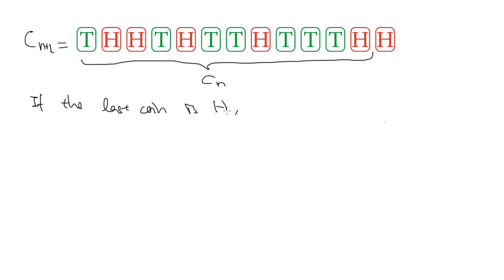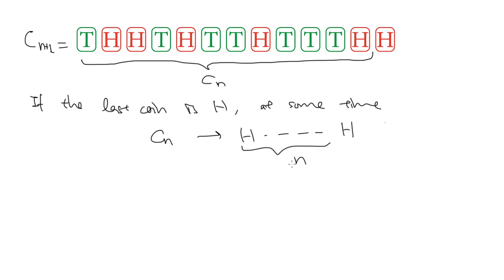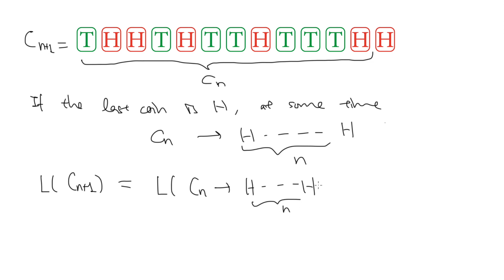If the last coin is a head, we cannot directly remove it, because at some point we need to turn it over. So the key observation is that when this happens, the first n coins must be all heads. And then we turn the last coin over and go all the way back to zero by flipping all the coins from head to tail. So the total number of operations is the number of operations from changing the first n coins to all heads, plus the final n plus 1 operations. So now we just need to worry about this first part: how to change the first n coins to all heads.